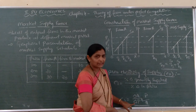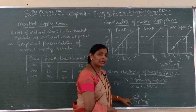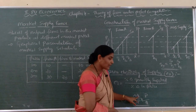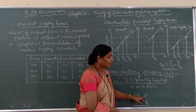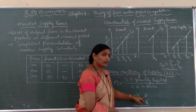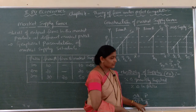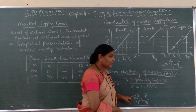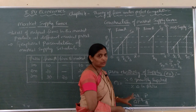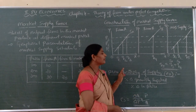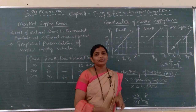The formula is delta Q divided by delta P into P by Q. Here delta indicates change. Change in quantity supplied divided by change in price, multiplied by P — the original price — divided by Q — the original quantity. This formula is used to calculate price elasticity of supply. I hope the concept is clear to you. Thank you.